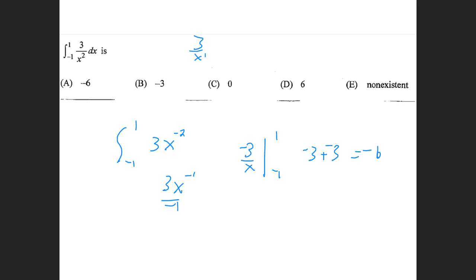But looking at my calculator graph of 3 over x squared — that does not look like it would give negative 6 for an answer. The graph has a vertical asymptote at 0, so it goes up and up on both sides from negative 1 to 1. That area is going to keep adding up and up. This is actually a BC Calculus problem — you'd have to split it into two different integrals.